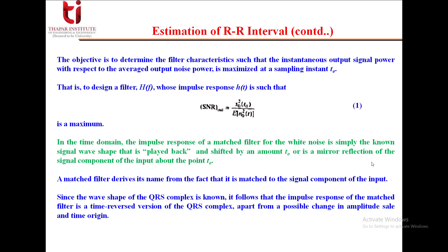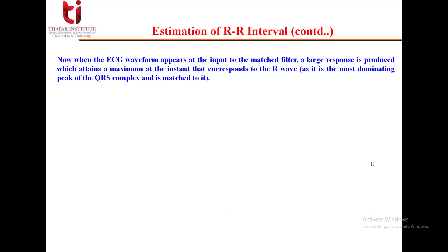Since the wave shape of the QRS complex is known, it follows that the impulse response of the matched filter is a time reversed version of the QRS complex, apart from a possible change in amplitude scale and time origin. When the ECG waveform appears at the input to the matched filter, a large response is produced which attains a maximum at the instant that corresponds to the R wave, as it is the most dominating peak of the QRS complex and is matched to it.